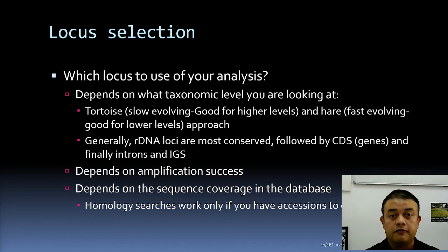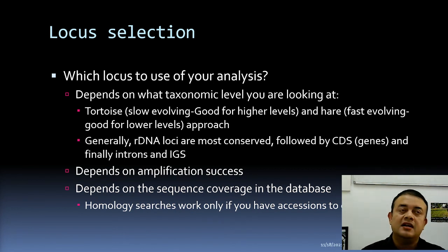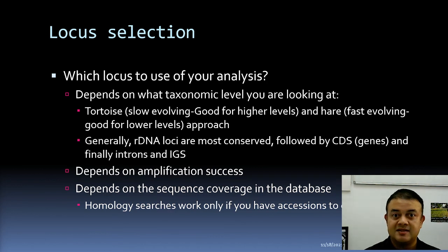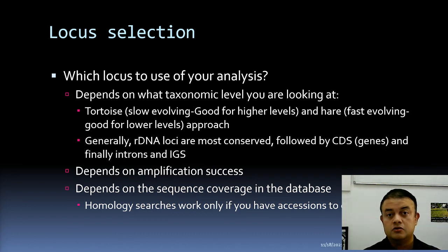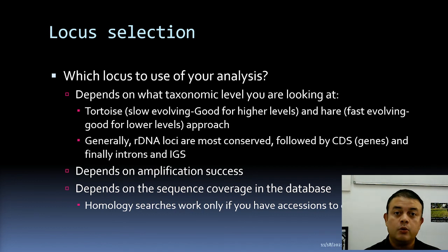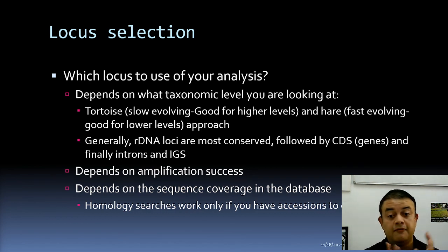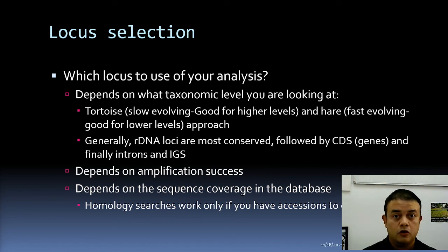Sequence coverage in the database is yet another important factor when deciding which locus to choose. Homology searches only work if you have accessions to compare to. If nothing is in the database, the comparison is useless. For a completely new genus with hundreds of species, you would need to sequence all of them before a phylogeny could be built. Sequence coverage is important, and the first step of phylogenetic reconstruction depends on this decision.